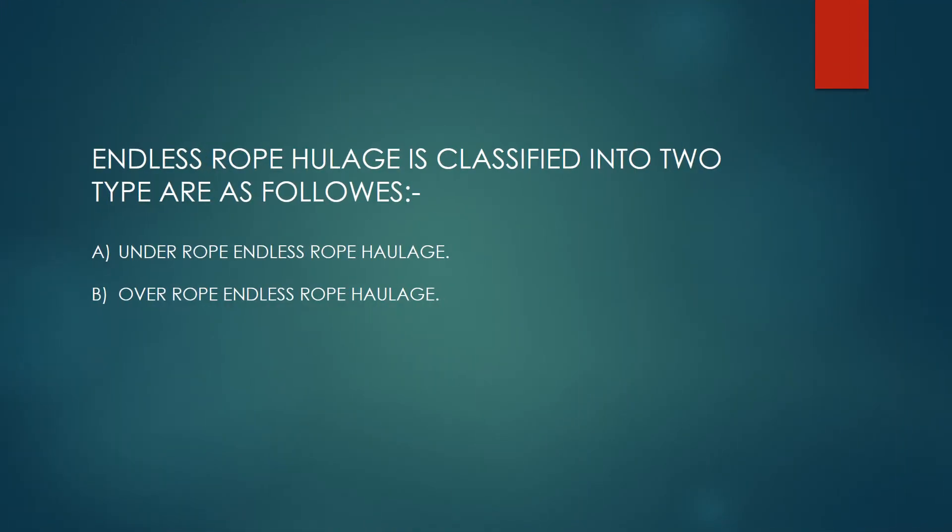The endless rope haulage is classified into two types, as follows: a. Under rope endless rope haulage. b. Over rope endless rope haulage.